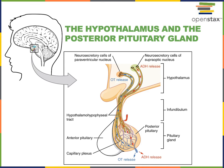The hypothalamus regulates the activity of the pituitary gland by producing hormones that are either secreted from the posterior pituitary gland or regulating the production of hormones released from the anterior pituitary gland. The hypothalamus and pituitary gland are connected through a stalk called the infundibulum, which contains the axons of neurosecretory cells located in the paraventricular nucleus and supraoptic nucleus of the hypothalamus.